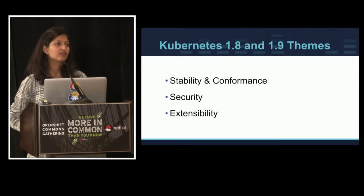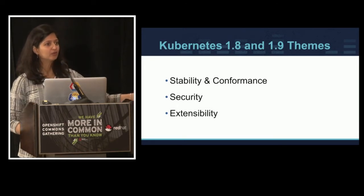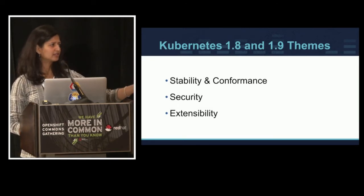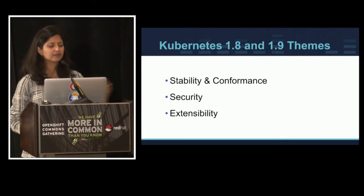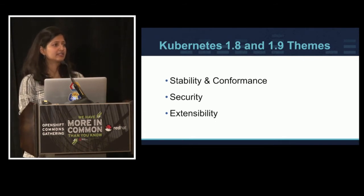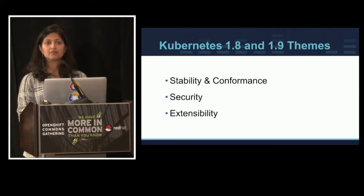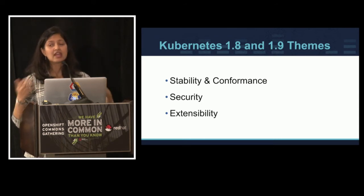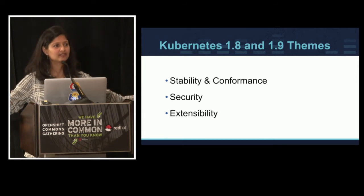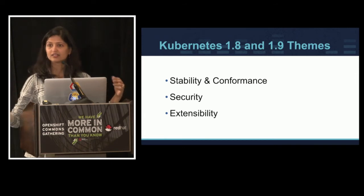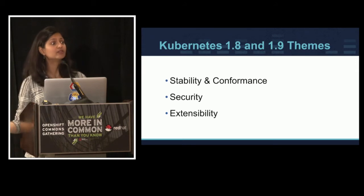These are the principles that drive the Kubernetes roadmap as it matures. The themes for the last two upstream Kubernetes releases — 1.8 and 1.9 (1.9 is coming out in a week) — were stability and conformance, security, and extensibility. These play to those needs. We're really trying hard as a community to make sure Kubernetes fits in with the environment and enables users to expand that footprint — for example, enabling Telus to go from 200 applications to all of their applications.